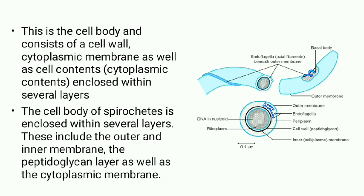The cell body of spirochetes is enclosed within several layers, including the outer and inner membrane, the peptidoglycan layer, and the cytoplasmic membrane. Treponema includes the agents of syphilis and yaws. Borrelia includes several species transmitted by lice and ticks, causing relapsing fever and Lyme disease in humans. Leptospirosis, caused by Leptospira, is a disease of domestic and wild mammals and is a secondary infection of humans.